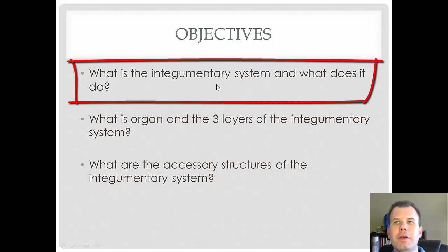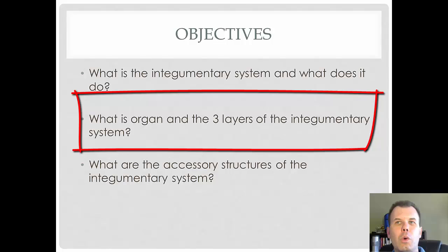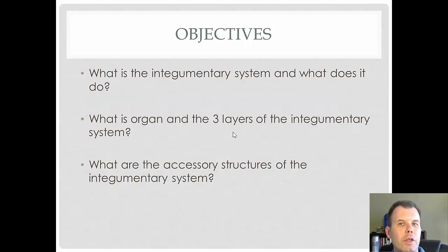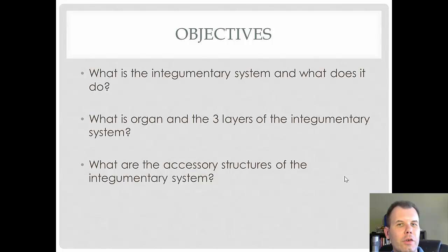What is the integumentary system and what does it do? We're going to talk about all the different functions and roles that the skin plays. We'll discuss the three layers of the integumentary: the epidermis, the dermis, and what a lot of people call subcutaneous, or the hypodermis — hypo meaning below or less, which is the lowest level. Then we'll look at accessory structures including sweat glands, oil glands, hair follicles, and other different structures you have as part of your skin all over your body.